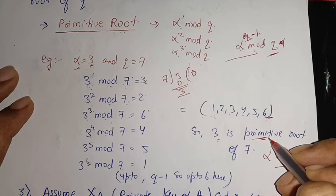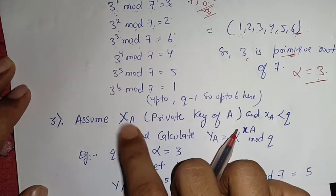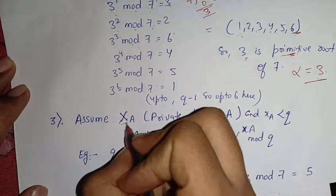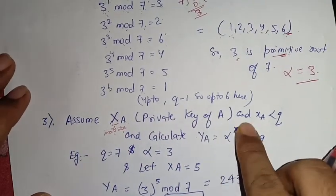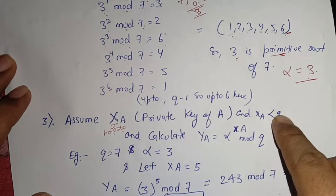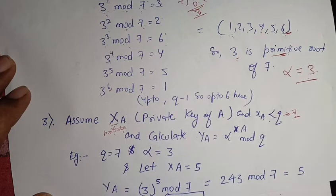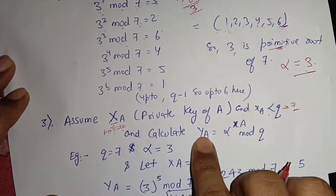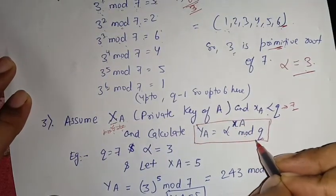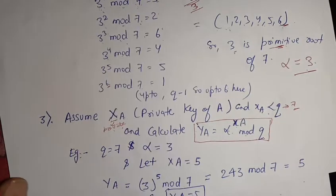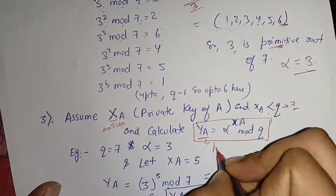The third step is to assume XA, which is the private key of A. XA must be less than Q. We also need to calculate YA, the public key of A. The formula is: YA = alpha^XA mod Q. Remember: X means private, Y means public.